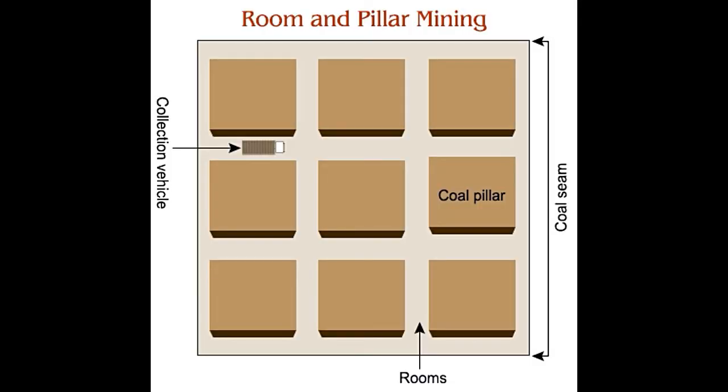Room and pillar mining. In this method, mining is carried out in an ore deposit, leaving behind some of the ore in the form of columns to support the roof and prevent it from collapsing. Thus, it results in the formation of spaces called rooms, where the ore is excavated with pillars of ore distributed throughout. When the ore bed is completely excavated, these pillars can be harvested for additional ore, a process called retreat mining.